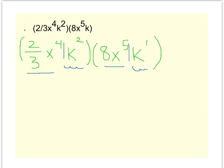So when I multiply my x values together, 2/3 times 8, I really get 16 over 3. So I have 16 over 3 x to the 9th, because when I multiply my x's, you add the exponents. 4 plus 5 gave me that 9. Then k squared times k to the 1st will be k to the 3rd.